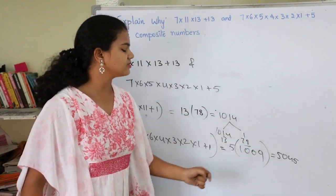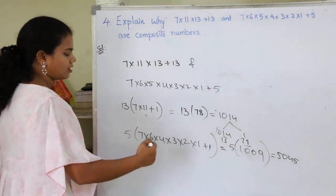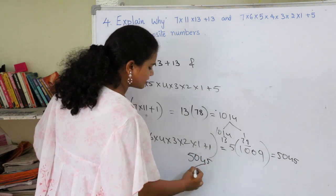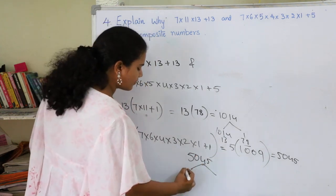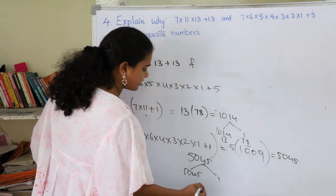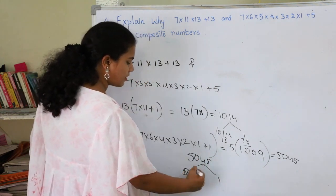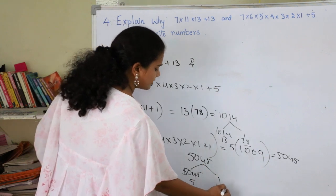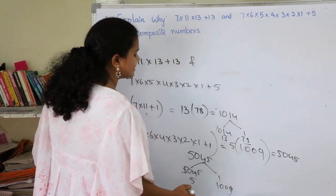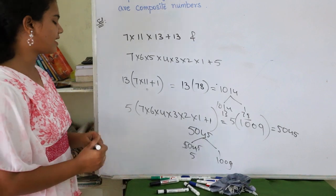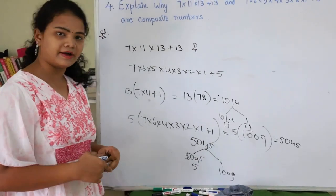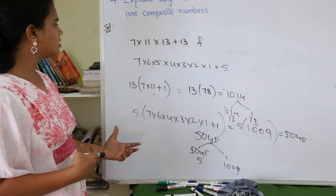For 5045, I not only have the number and 1 as factors, but I also have 5 and 1009. By this I can say that I have more factors other than the number itself and 1, which makes it a composite number.